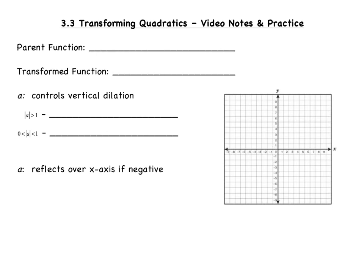It is f of x equals x squared. And when it is graphed, it will look like this. Remember, the vertex of the parent function is always (0, 0).